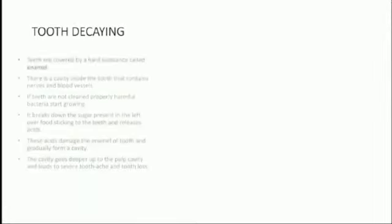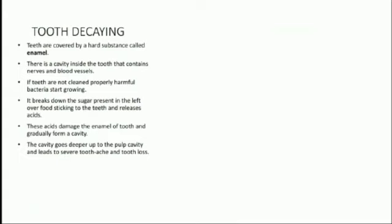Now let us come to how tooth decay takes place. Teeth are covered by a hard substance called enamel. There is a cavity inside the tooth that contains nerves and blood vessels. If teeth are not cleaned properly, harmful bacteria start growing. They break down the sugar present in leftover food sticking to the teeth and release acids. These acids damage the enamel and gradually form a cavity that goes deeper up to the pulp cavity, leading to severe toothache and tooth loss.